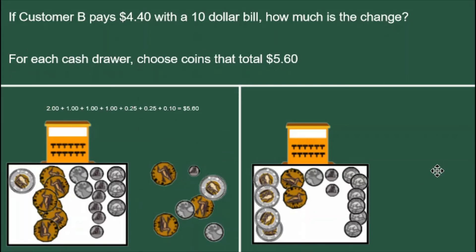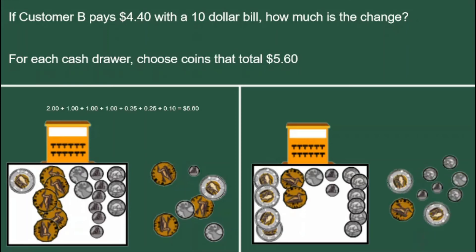In the cash drawer on the right, I have enough toonies so that I can make $5 by combining two toonies and a loonie. To get the $0.60, I only have one quarter, and I only have two dimes, so I'll choose all of those. A quarter plus two dimes adds up to $0.45. I need three of the nickels to make it go up to $5.60. And this is what the total looks like.